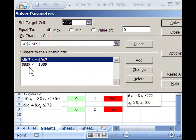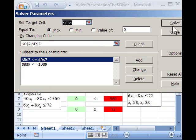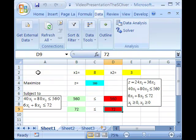I'm going to click cancel because I have them both in here. Put both constraints in, then click the options button. The options, make sure you assume a linear model and non-negative results because that was one of your constraints. Click OK, and then click solve. Say OK to keep the solver results, and there is your answer.